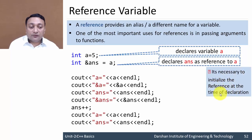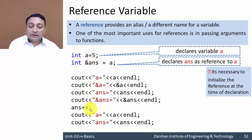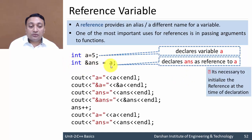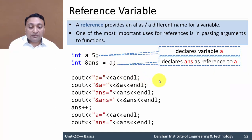An important thing is that it is necessary to initialize the reference at the time of declaration. If we declare variable 'a' equals 5 and later try to assign the reference 'answer' equals 'a' in the middle of code, that is not allowed. You must provide the reference name at the time of initialization.